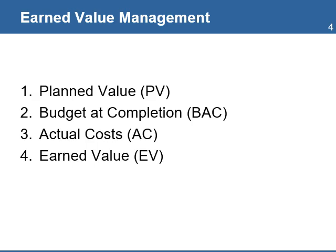Budget at Completion is the value at the end of the project. It is calculated at the start of the project based on the project work and its individual components. Actual Cost is the total direct and indirect costs incurred in accomplishing the work of a project during a given period of time.